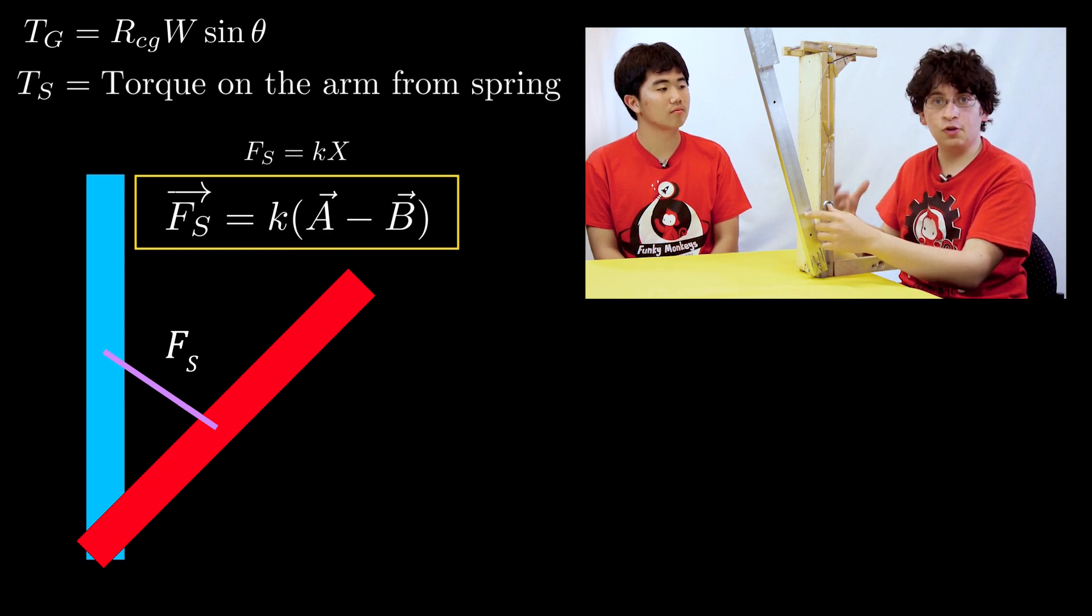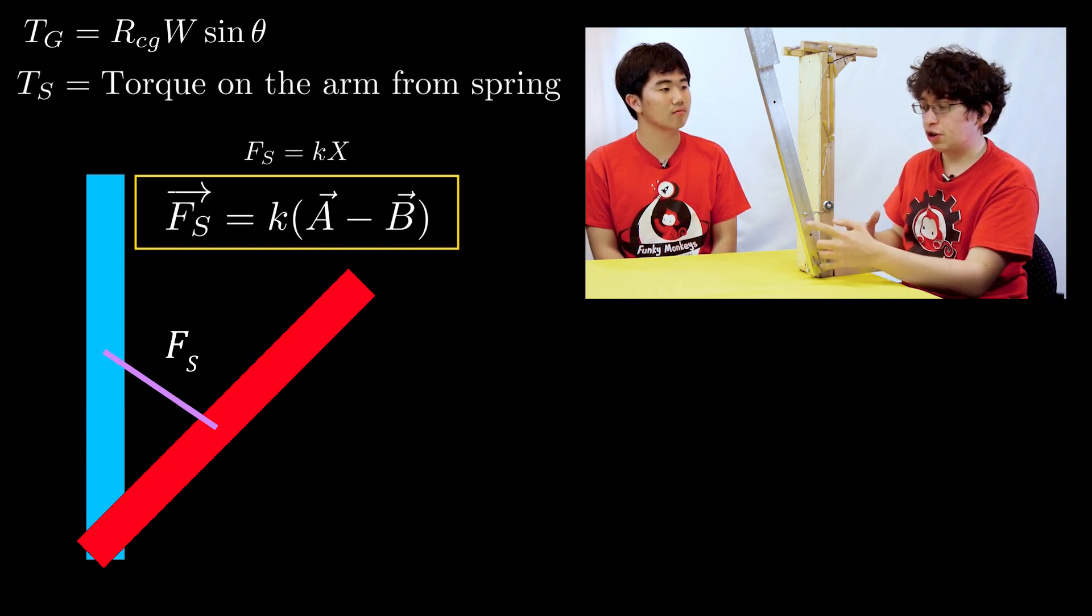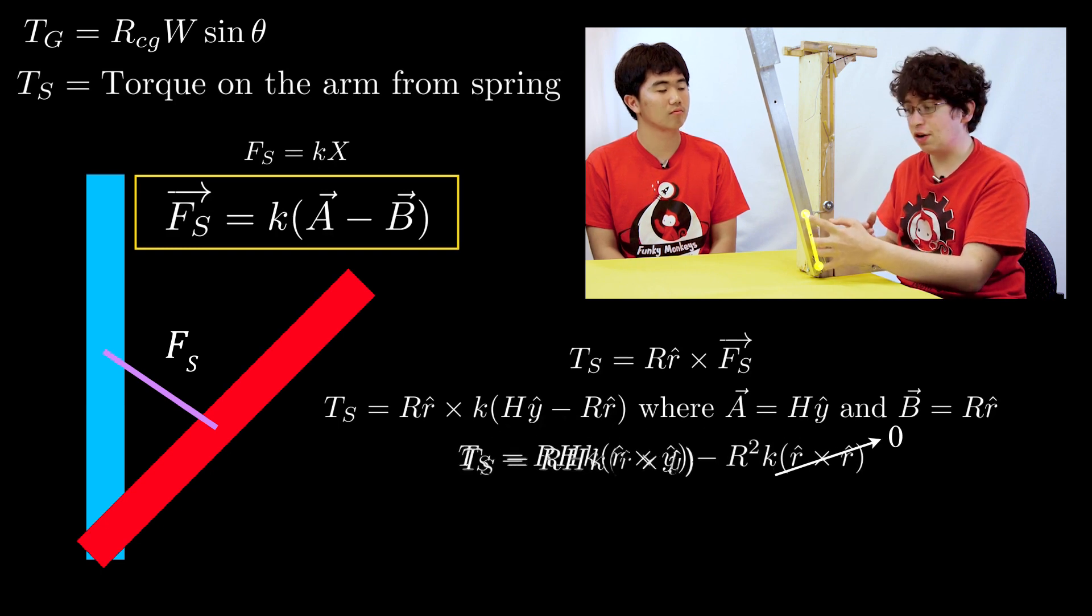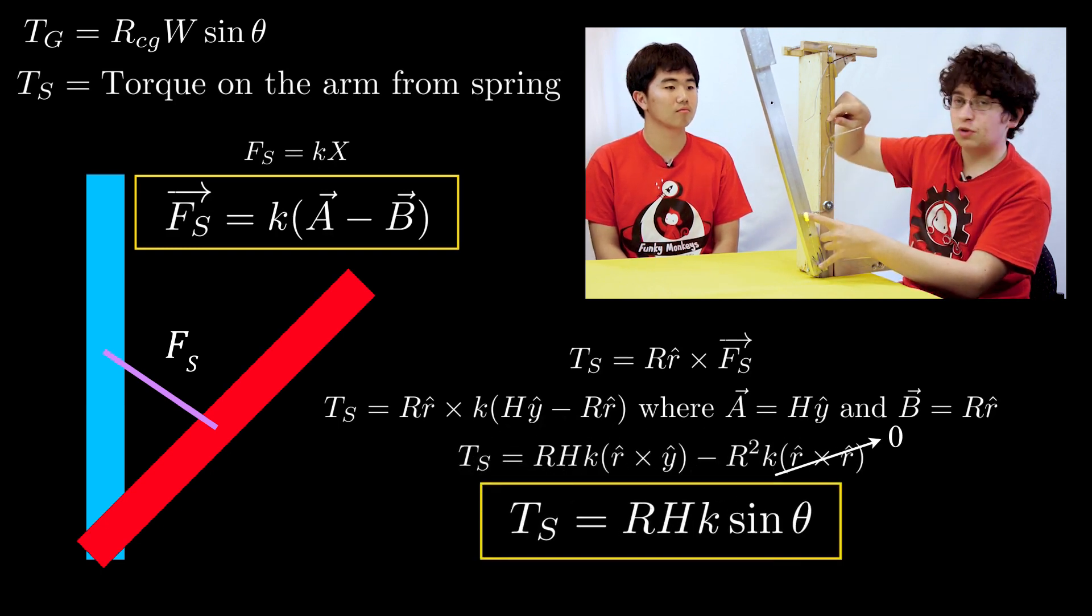So if you take that force of the spring and do the cross product of the radius to the attachment of the spring on the arm with the force of the spring, then you'll get the torque of the spring on the arm.